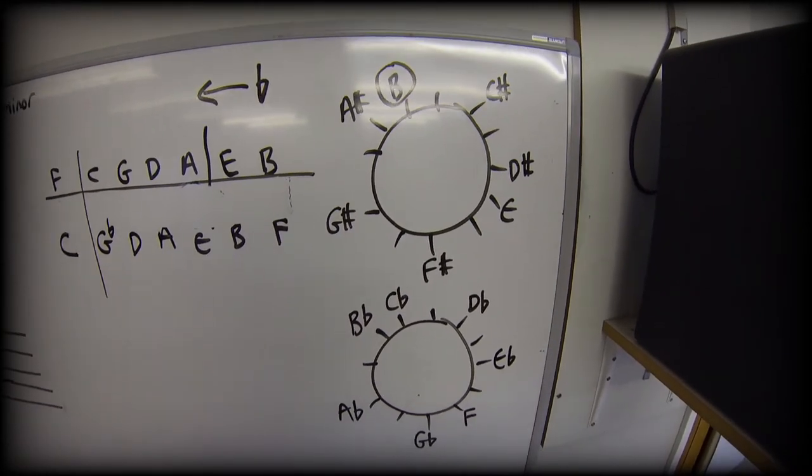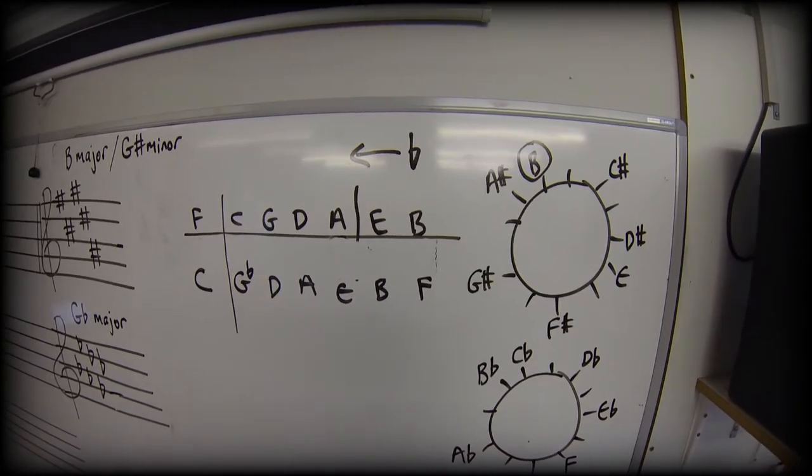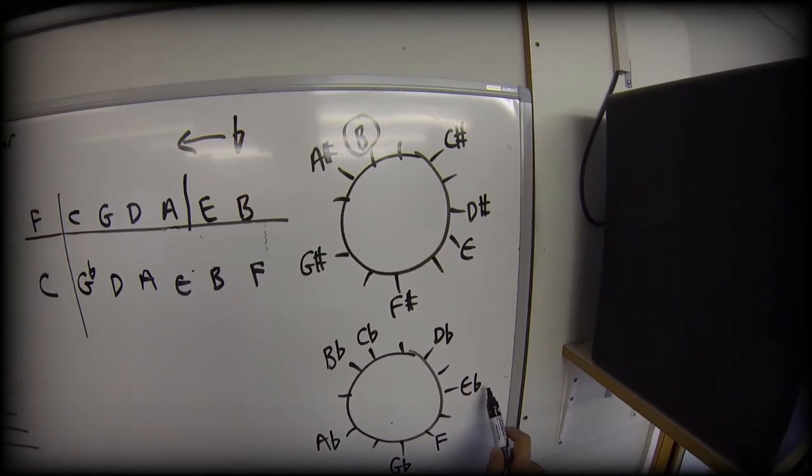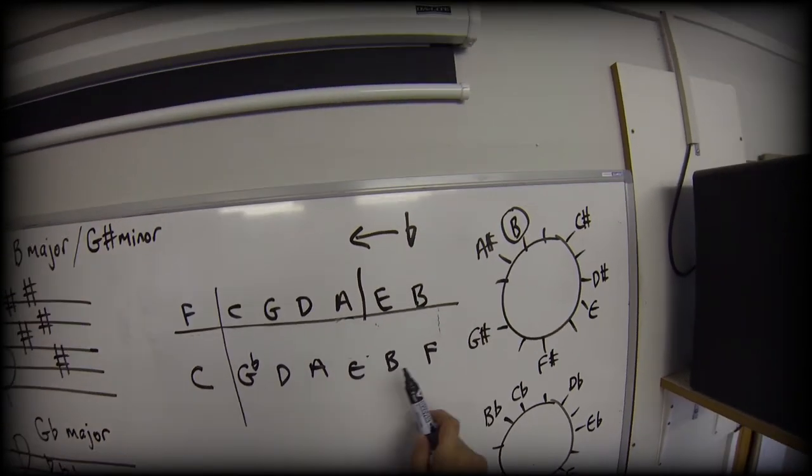And if I count up my flats, one, two, three, four, five, six, and they are B flat, E flat, A flat, D flat, G flat. So everything agrees.